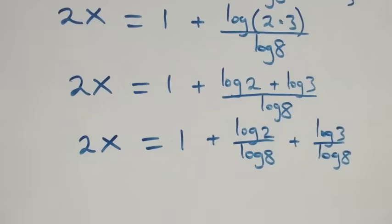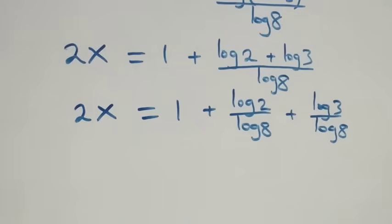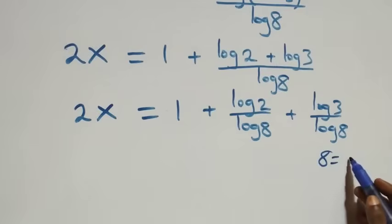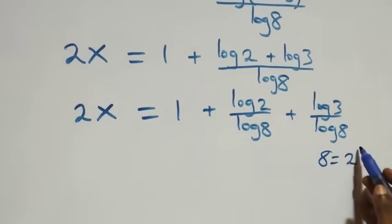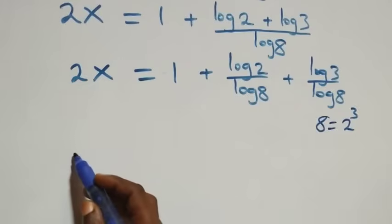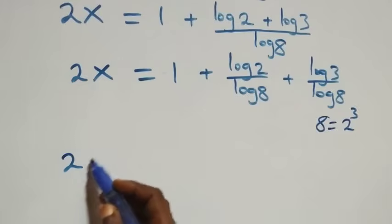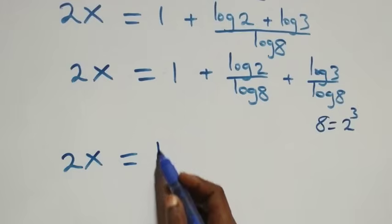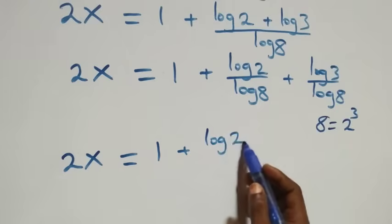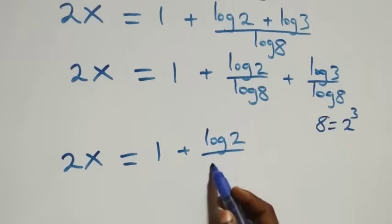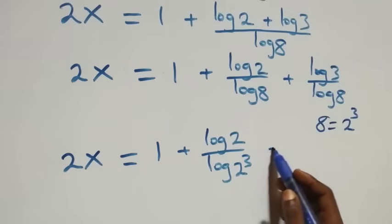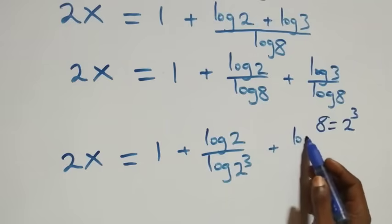Next, we express 8 as 2 raised to power 3. So what we have becomes 2x equals 1 plus log 2 over log(2³) plus log 3 over log(2³).